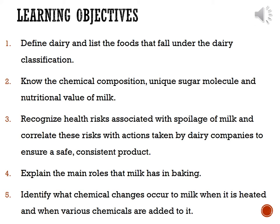First and foremost, we're going to define dairy, list the foods that fall under the dairy classification, know the chemical composition and the unique sugar molecule associated with milk and dairy products, and then the overall nutritional value of milk. Related to food safety, we'll recognize health risks associated with spoilage of milk and correlate these risks with actions taken by dairy farmers and companies to ensure a safe consistent product.